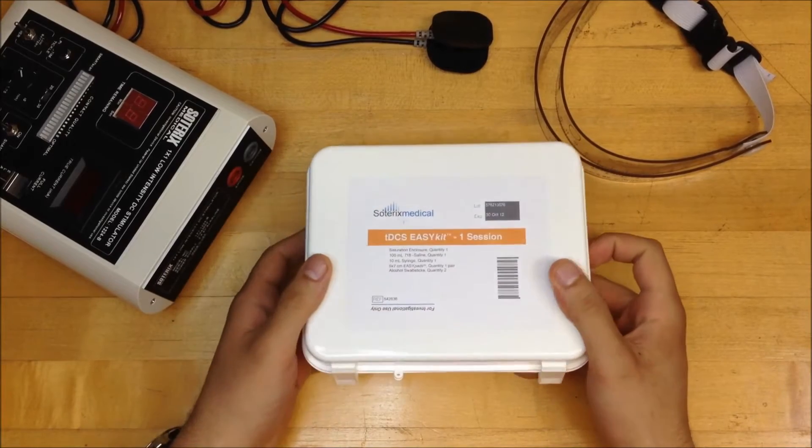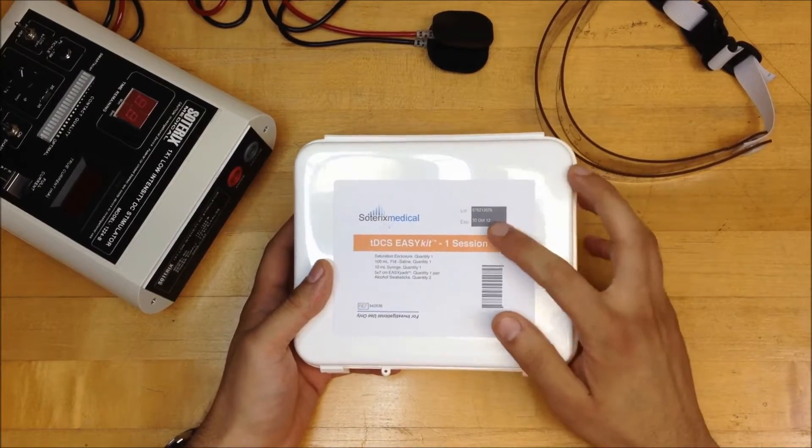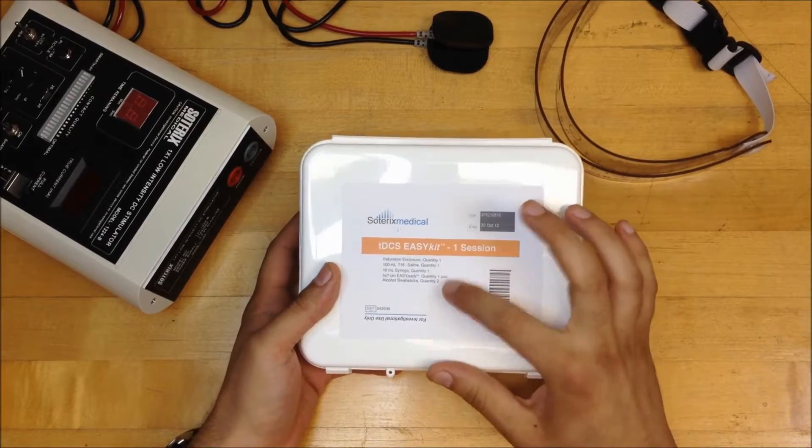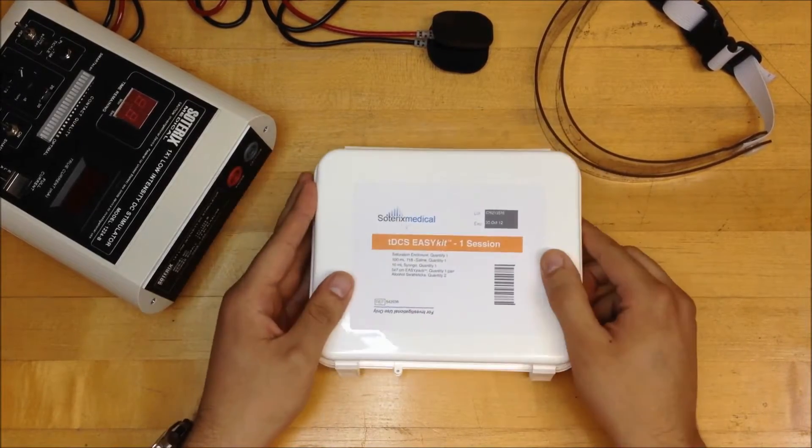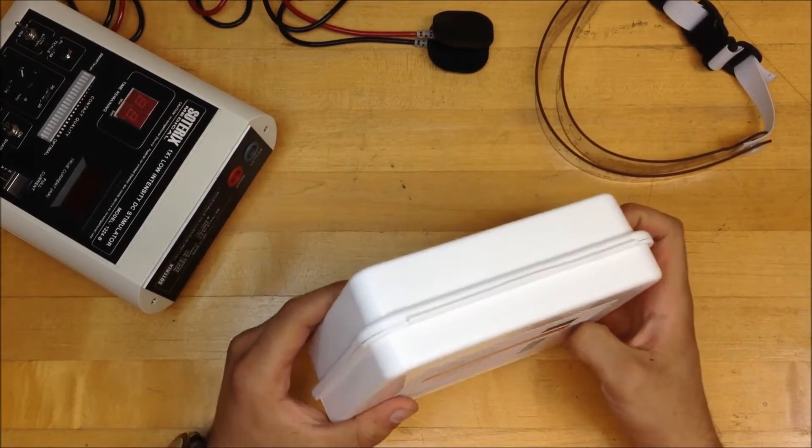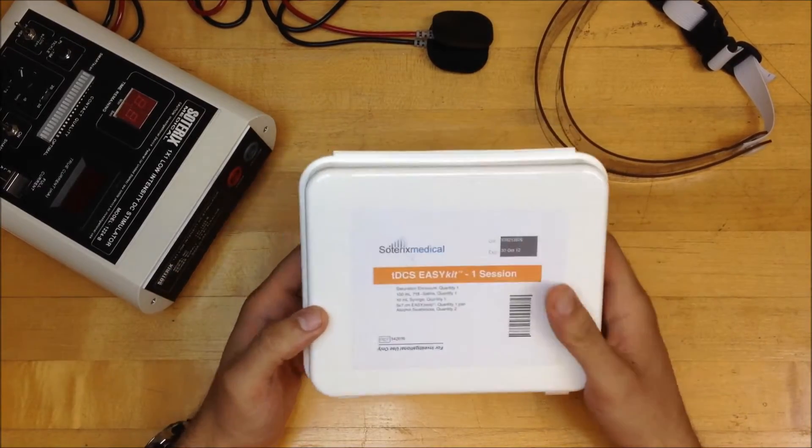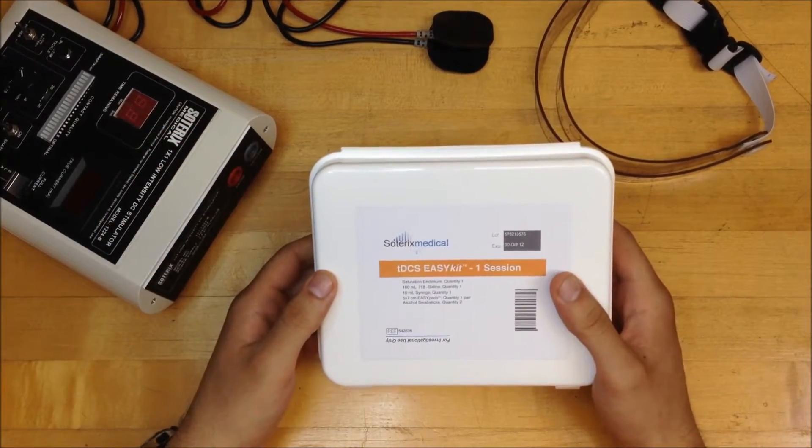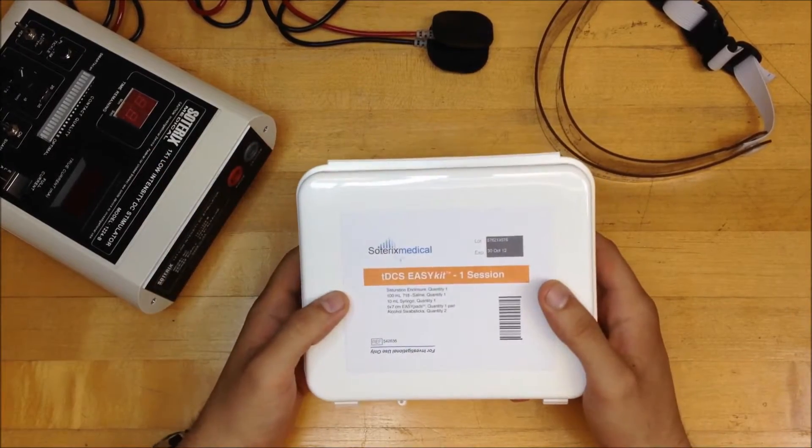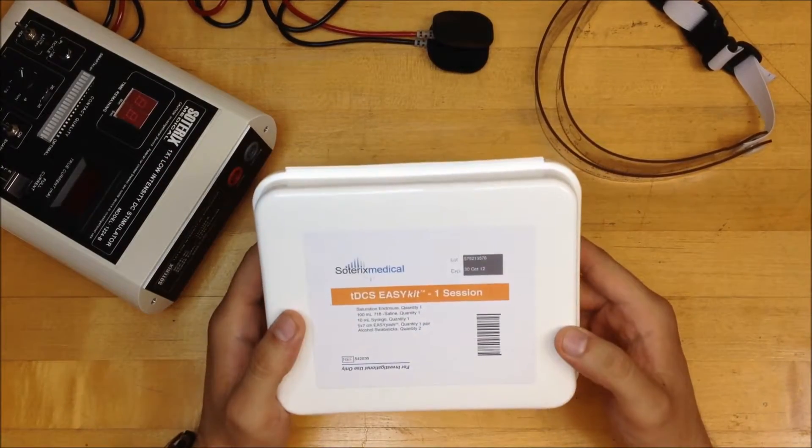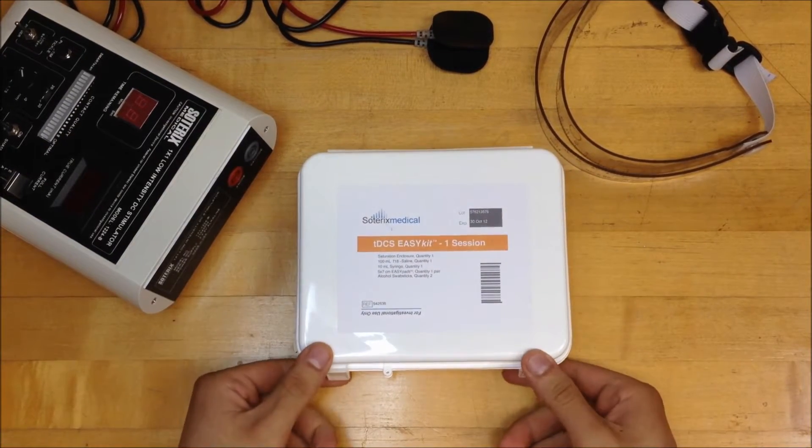As you can see on the label of the kit right here, it says only for 1 session. It tells you also the expiration date and lists all the contents of the box. Before we open it, I just want to share with you that it is small in size, so you can basically take it anywhere. And it is made of hard plastic, so it is very durable, which I really like about this Easy Kit.